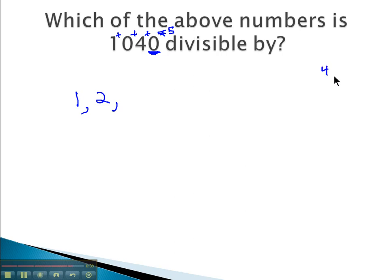What about four? Does four go into forty, the last two digits? Yes, it does, with no remainder, so four goes into the entire thing. Five. Well, the last digit is zero, so five goes in. What about six? To pass the test for six, it has to work for two and three. Two is in here, but three is not, so six doesn't work.